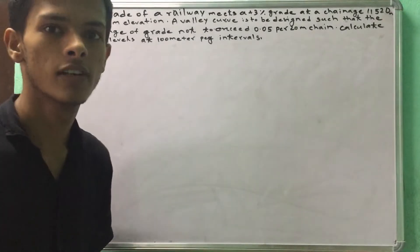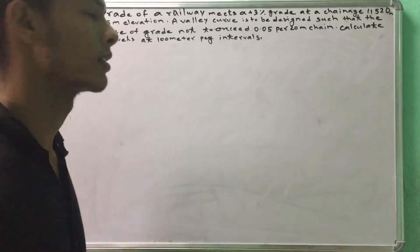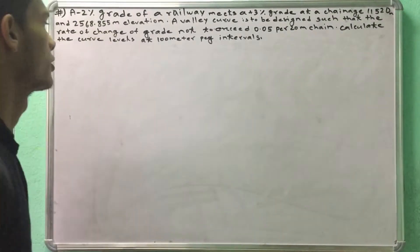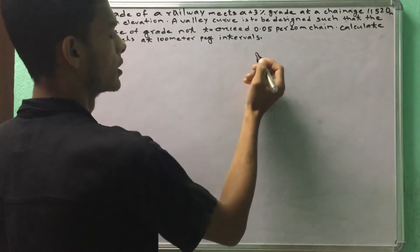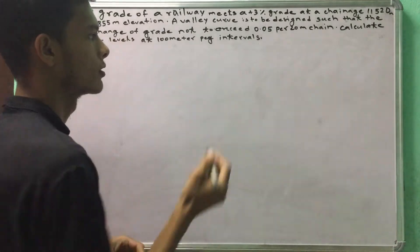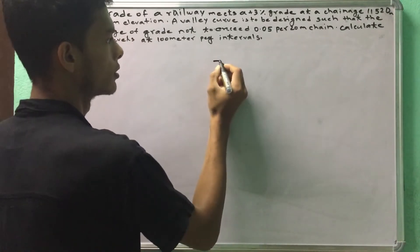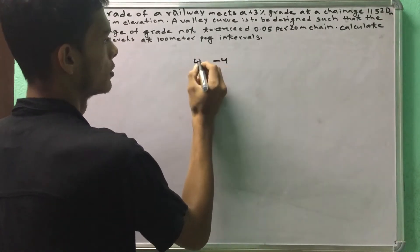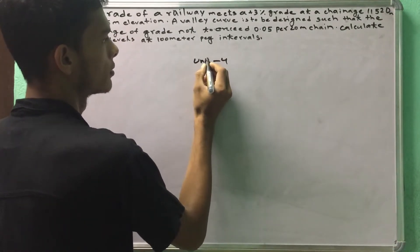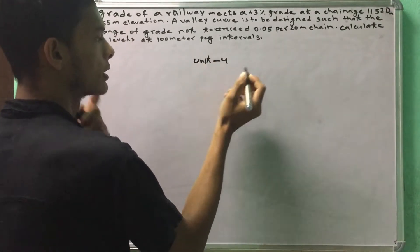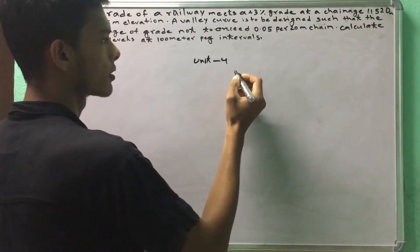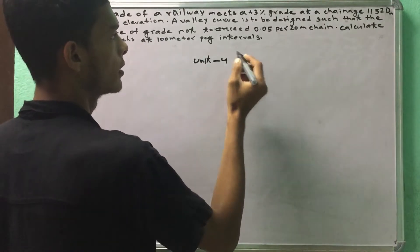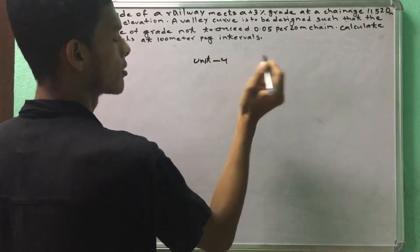Hello guys, I have Unit 4. Unit 4 — our particular curve actually does the class, which is called vertical curve.